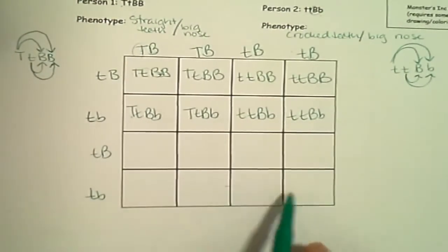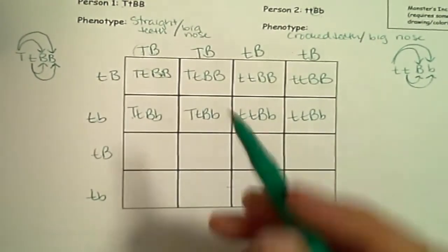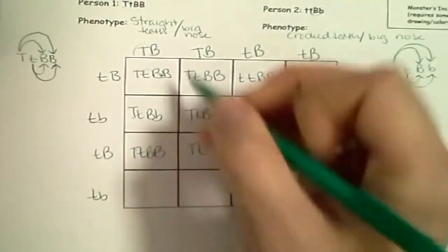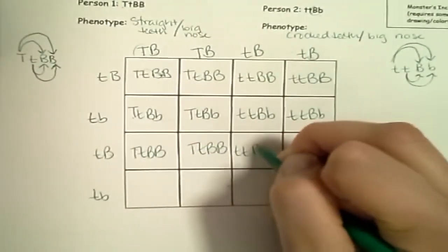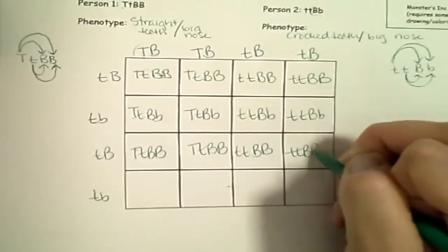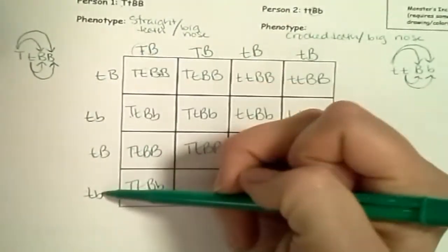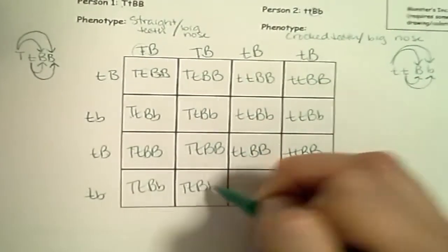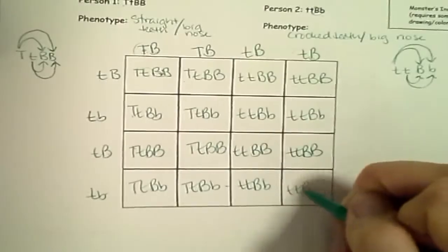If you get the hang of this, fill the rest out and skip ahead in the video until you see the answer. If you're struggling, stick with me. Continuing: big T, little t, big B, big B — then big T, little t, big B, big B. Last row: big T, little t, big B, little b — big letters always going first — then big T, little t, big B, little b. Little t, little t, big B, little b — it's kind of like a song.